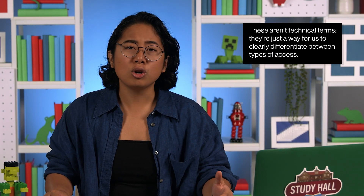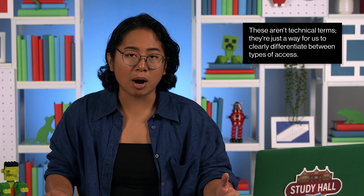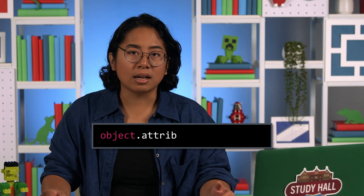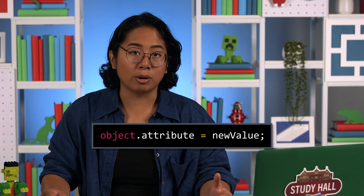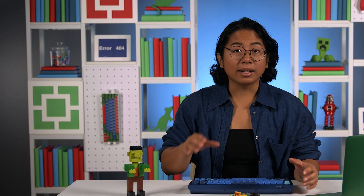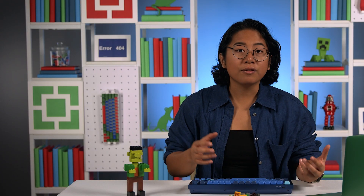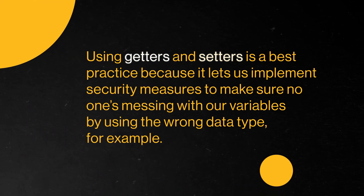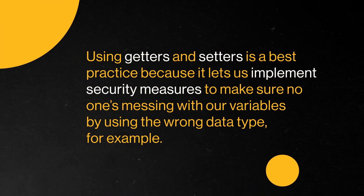In Java, we can designate two basic levels of access to class properties: direct and indirect access. Direct access involves reassigning an instance variable with the dot operator. Meanwhile, indirect access involves changing the value of a variable using getter and setter methods. Using getters and setters is a best practice because it lets us implement security measures to make sure no one's messing with our variables by using the wrong data type, for example.